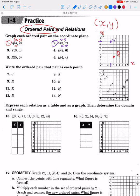Let's do another one in blue — the point T. T is at (0, 3). Zero on the X is right here, and then we go up to 3. We go 0 over, which means we don't move to the right at all — we stay at 0 — and then we go up 1, 2, 3, which puts us right there. That is our point T.